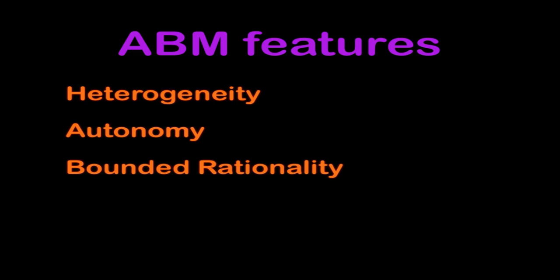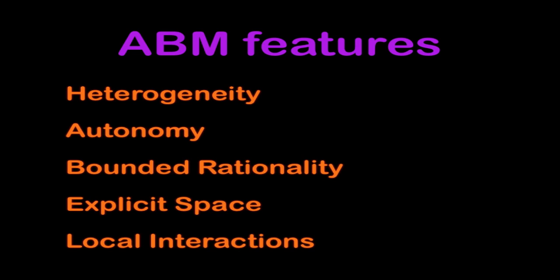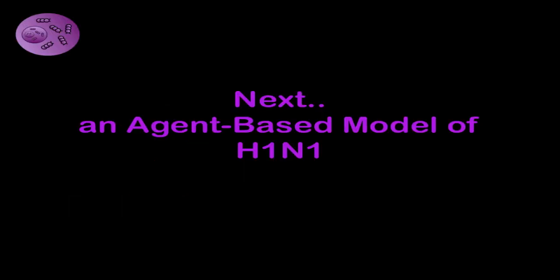Bounded rationality is really important. This is the idea that agents are not perfect optimizers — just like us, and in contrast to traditional economics views, they're making decisions based on a set of rules that are loose and based on prior experience. These interactions between agents occur in some kind of explicit space, which doesn't need to be a physical space, but some kind of interaction space. The interactions are themselves local. We don't know everything happening in the world; we know what's happening around us immediately, and the information we can get from people we communicate with in social space.